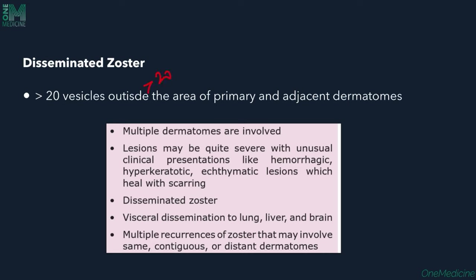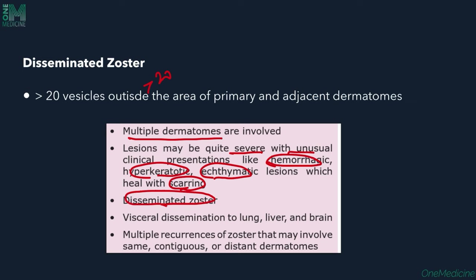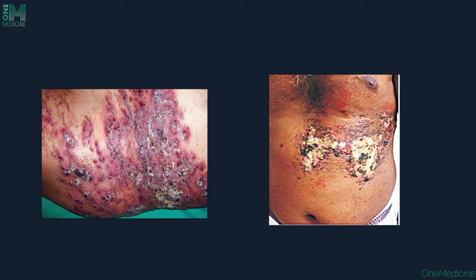In immunocompromised patients, multiple dermatomes are involved with more severe, hyperkeratotic, ecthymatous lesions. Disseminated Zoster with visceral involvement of lungs, liver, and brain is seen. Multiple recurrences and necrotic ulcerative lesions are unusually seen in immunocompromised patients. Development of new lesions after a week should prompt evaluation for immunodeficiency.